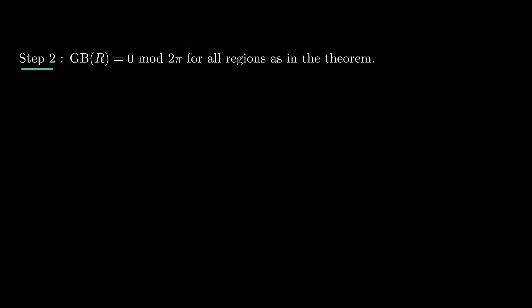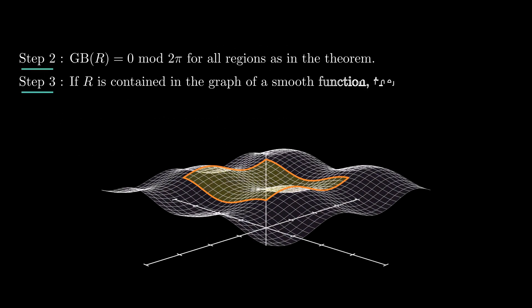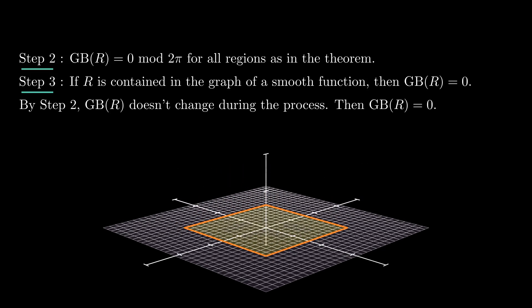Now we are ready to prove the Gauss-Bonnet formula. First, assume the region R is contained in a portion of the surface that is the graph of a smooth function with respect to a suitable coordinate system. In that situation, we can deform our region R into a flat region. Throughout this deformation, GB doesn't change, because if it did, it would do so continuously — but by step 2 it can only change by a multiple of 2pi. This means GB of the original region equals GB of the deformed flat region, which by the Hopf Umlaufsatz is 0. This concludes step 3.